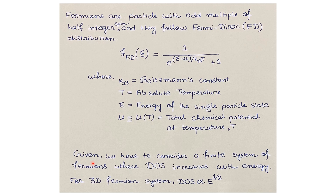The question states we have a finite system of fermions where the density of states (DOS) increases with energy. For a one-dimensional fermionic system, DOS varies as E^(−1/2), which is a decreasing function. For a two-dimensional system, DOS varies as E^0, which is constant. For a three-dimensional fermionic system, DOS varies as E^(1/2), which is an increasing function. So for our case, the fermionic system is a three-dimensional system.